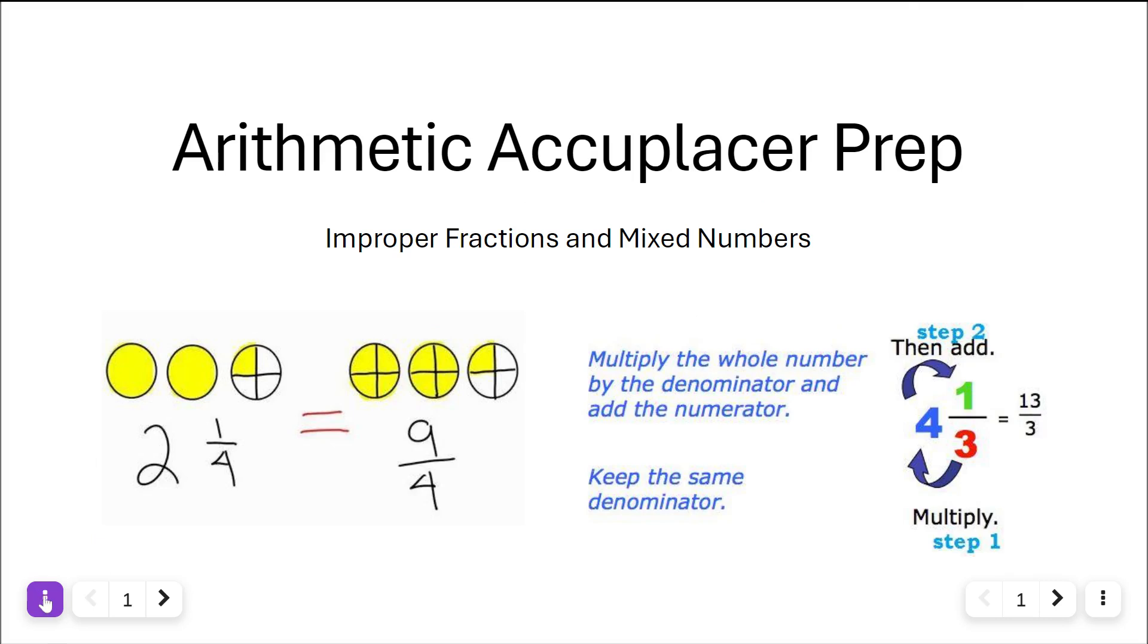So let's say you had a number. Let's go ahead and write down what we have here. Here's a mixed number. A mixed number is a combination of a whole number and a fraction, and then here we have an improper fraction which we'll talk about coming up.